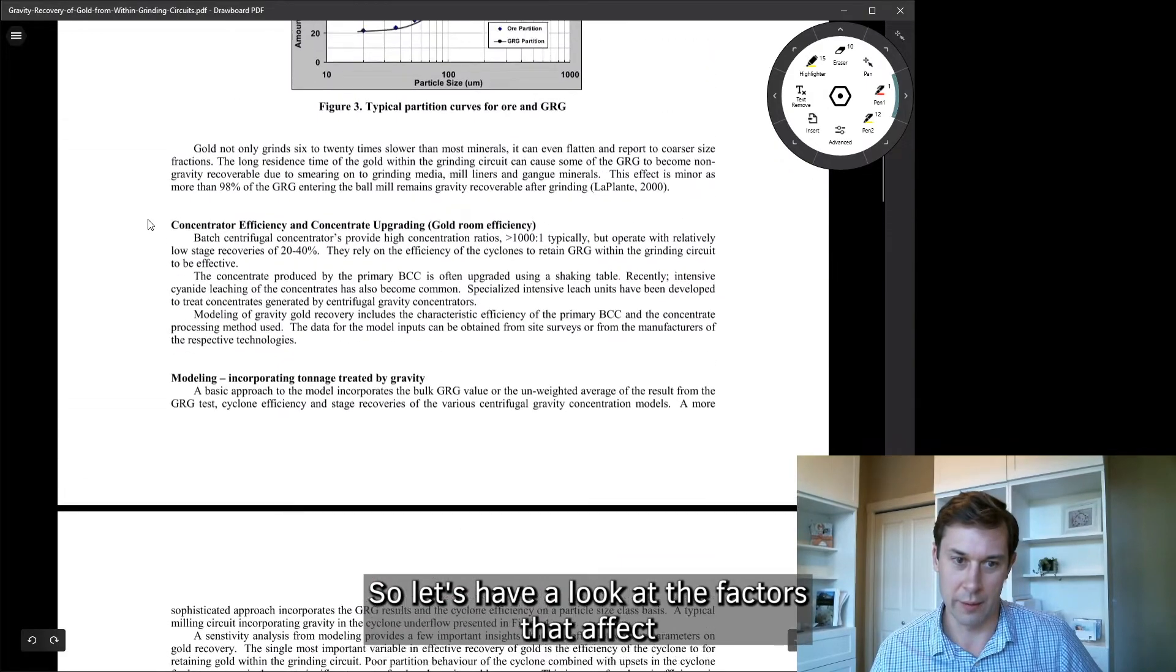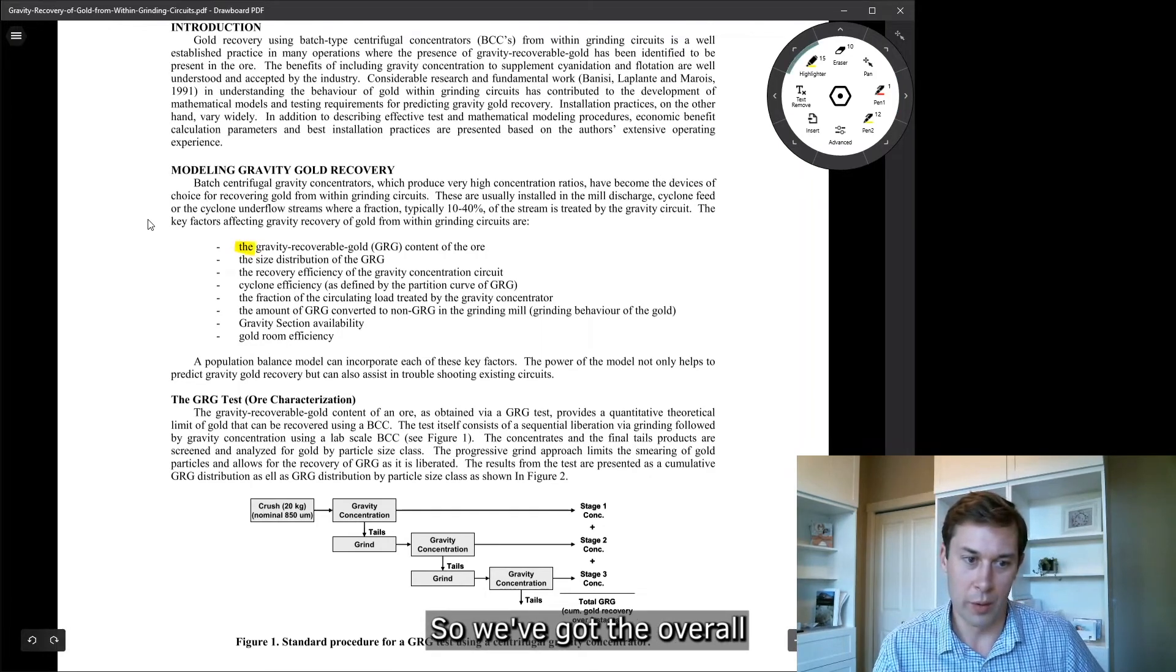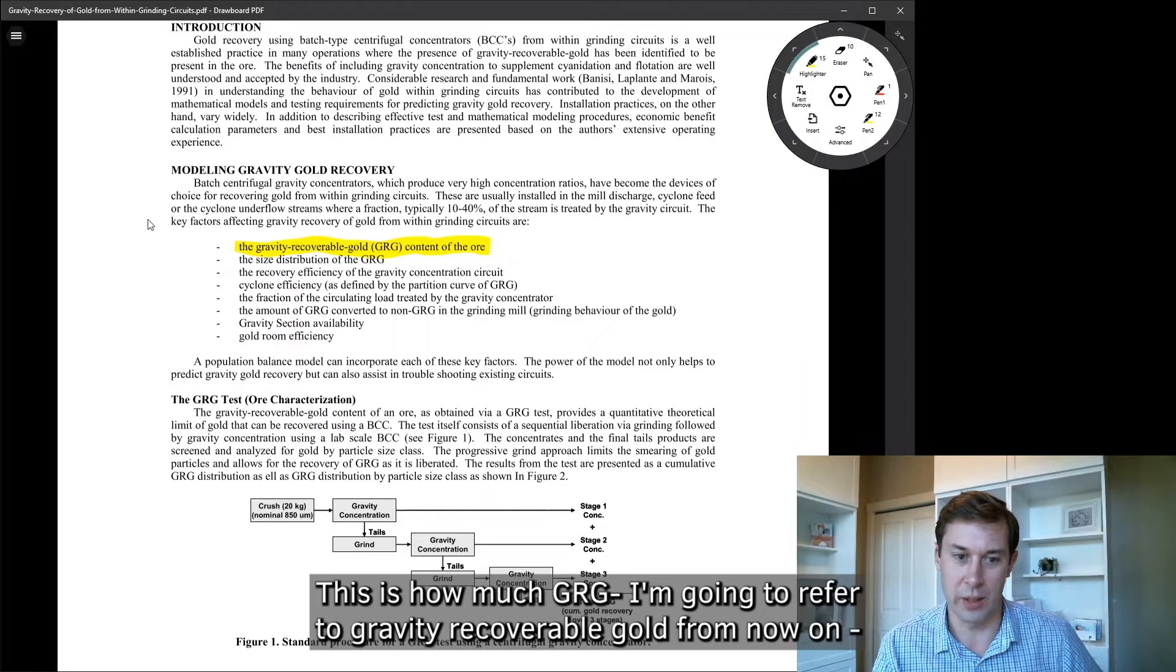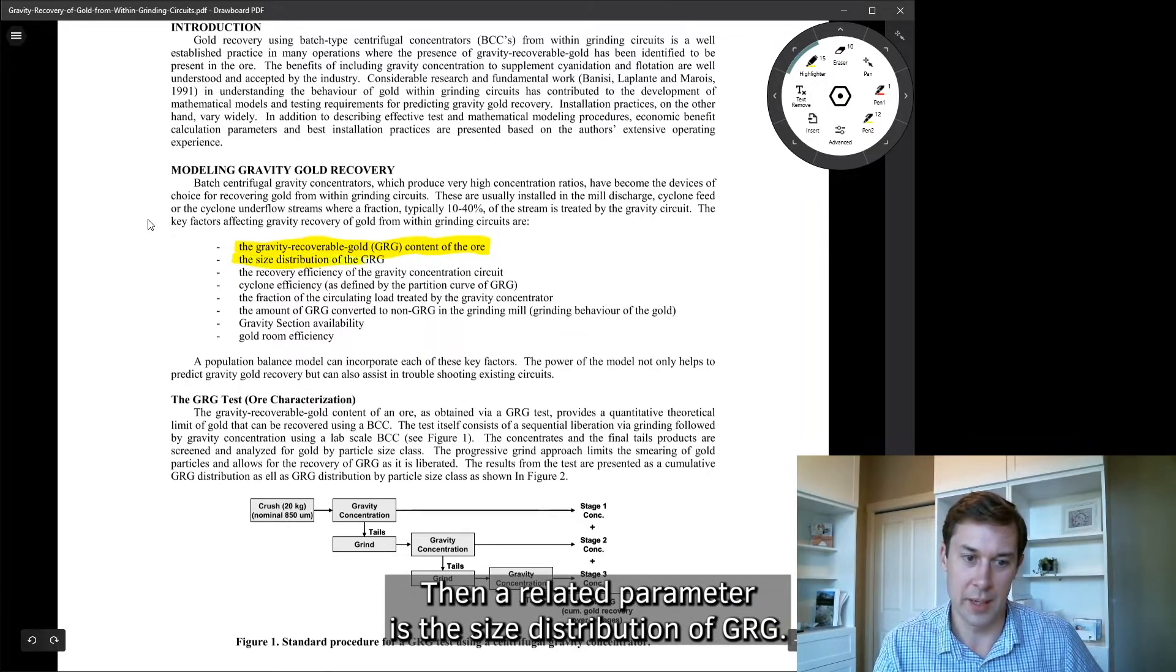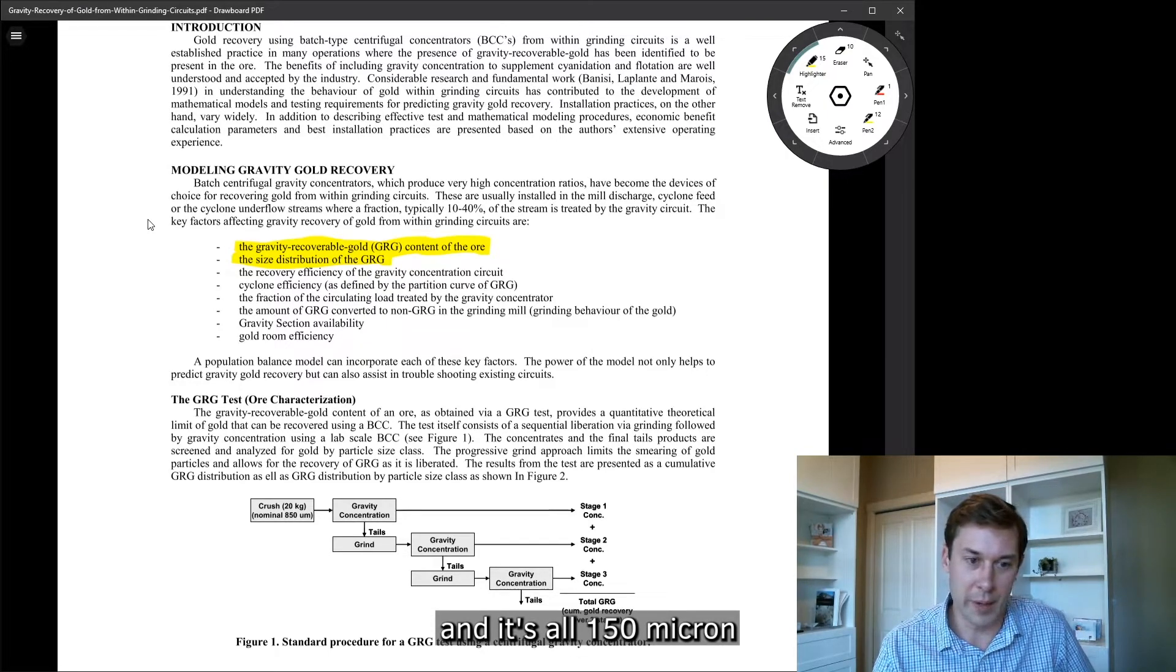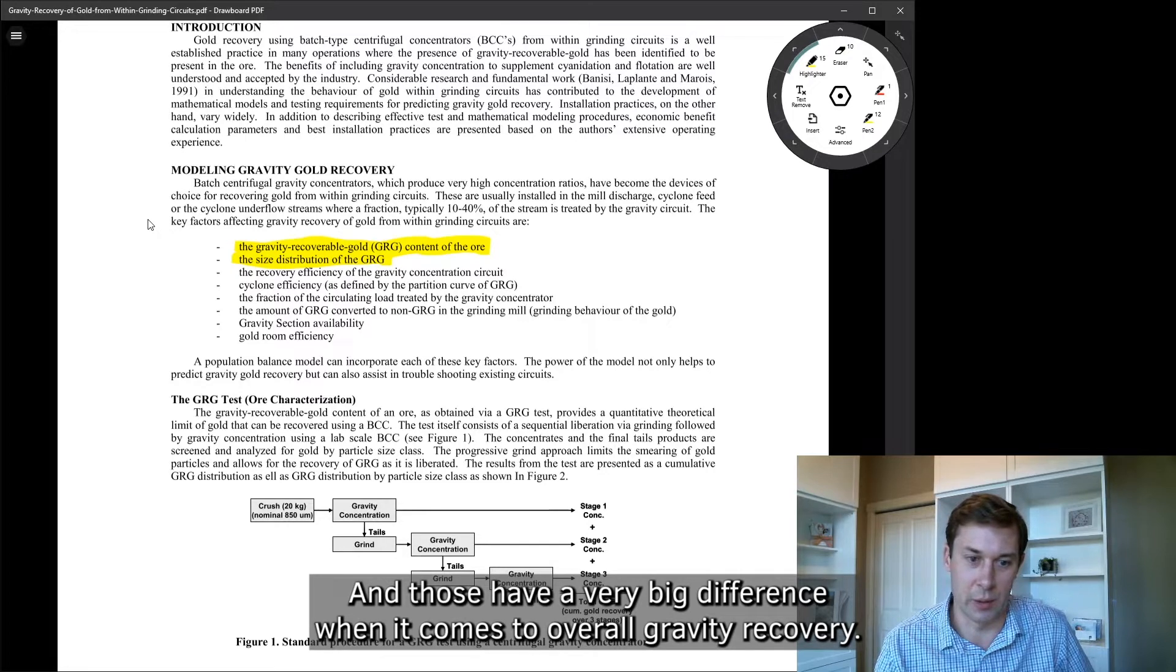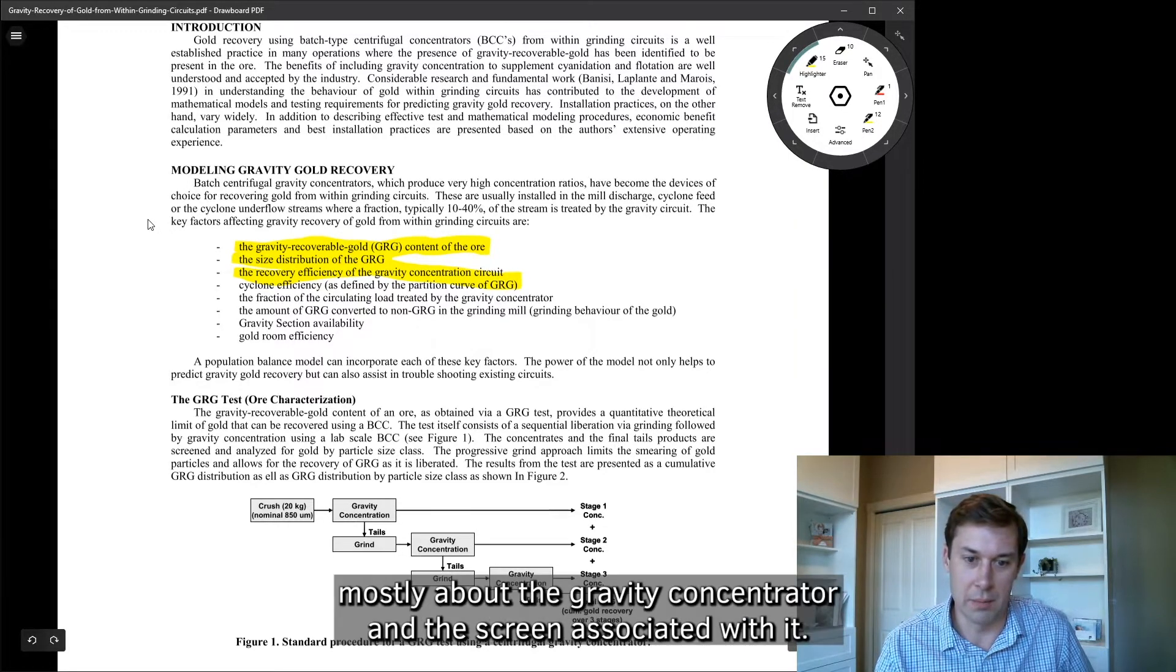So let's have a look at the factors that affect gravity recovery. So we've got the overall gravity recoverable content of the ore. That's one number. This is how much GRG, I'm going to refer to gravity recovery gold as GRG from now on, how much GRG is actually in the ore. Then a related parameter is the size distribution of GRG. So you may have a situation where we've got 50% GRG and it's all 150 micron, or we've got the same amount and it's all 10 micron. And those have a very big difference when it comes to overall gravity recovery.